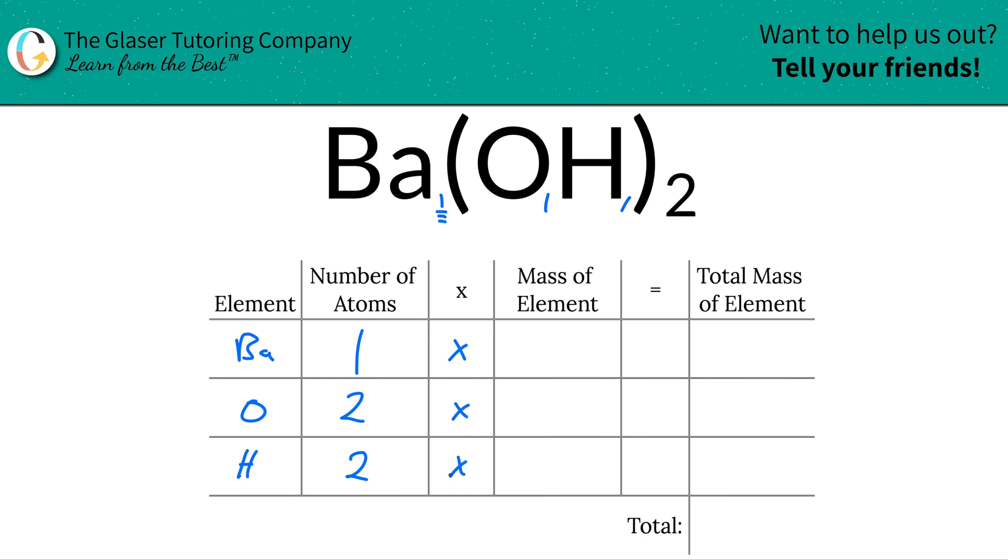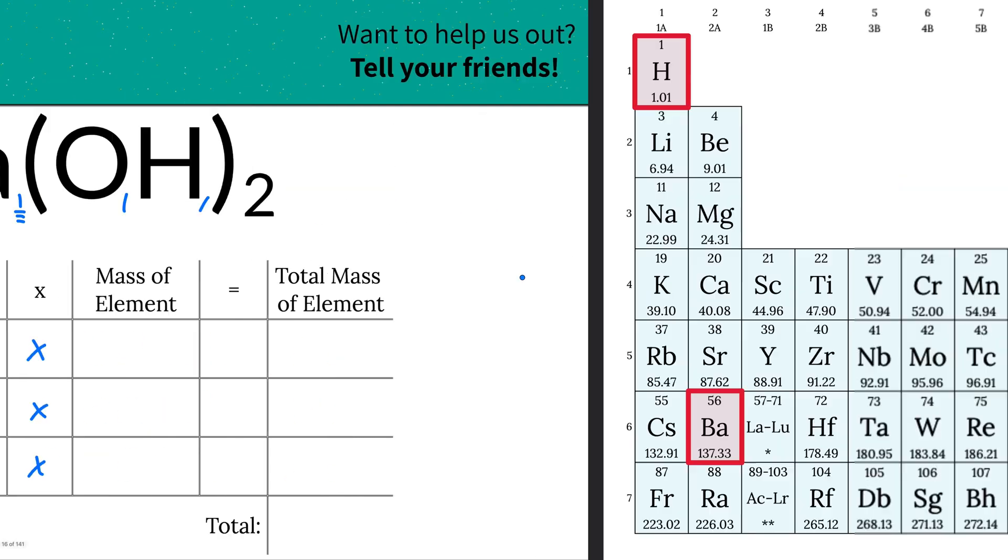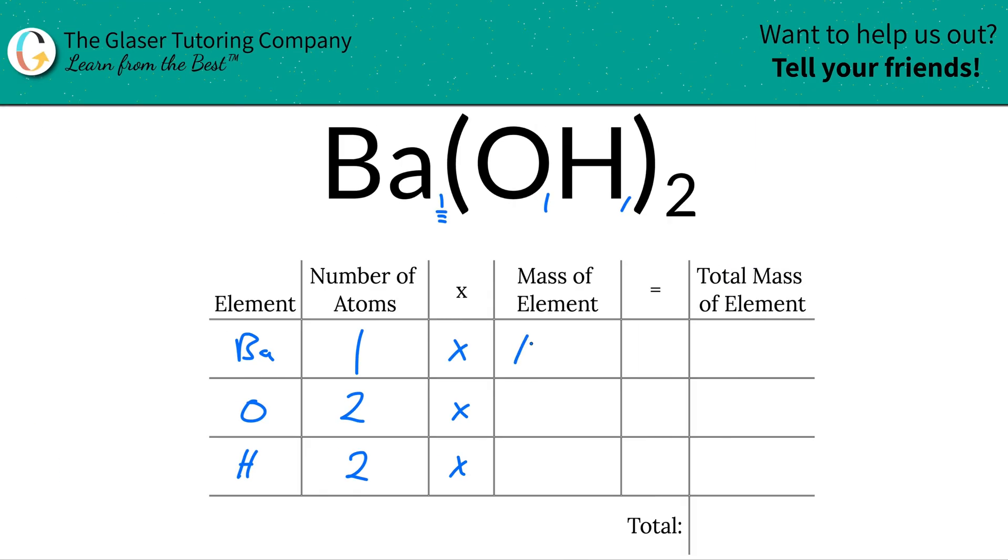Now we're going to take those number of atoms, and now we're going to multiply it by the mass of each particular element. That's where the periodic table comes in. So the periodic table here says that barium has a mass of 137.33. Now that could be in grams per mole if you're calculating molar mass, or in AMU if you're calculating molecular mass. Oxygen is 16, and then hydrogen is about 1.01.